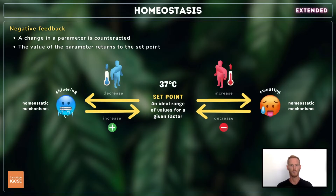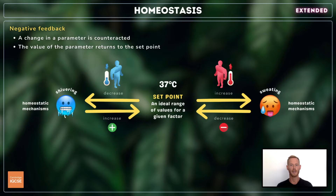For example, the set point for internal body temperature in humans is around 37 degrees. Whenever temperature increases relative to this point, homeostatic mechanisms like sweating quickly bring it back down. Equally, if core body temperature falls below the set point, other mechanisms like shivering bring it back up.